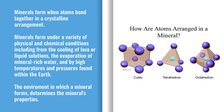Minerals form when atoms bond together in a crystalline arrangement, as you can see in some examples on the right. Minerals form under a variety of physical and chemical conditions, including from the cooling of lava or liquid solutions, the evaporation of mineral-rich water, and by high temperatures and pressures found within the earth.